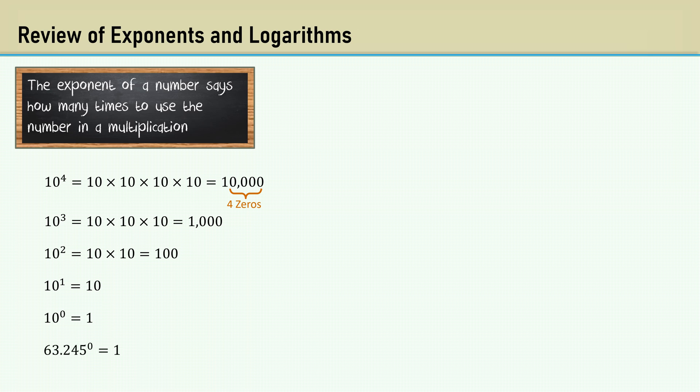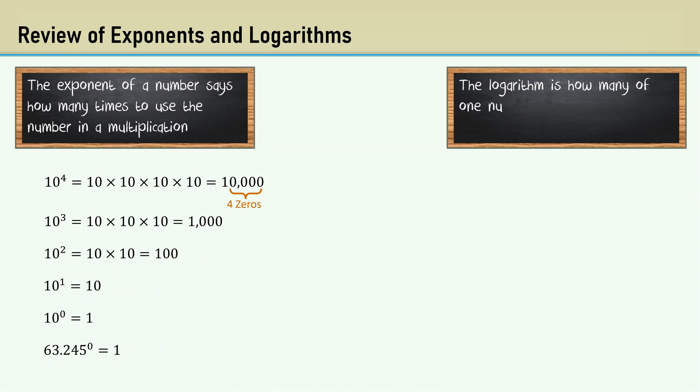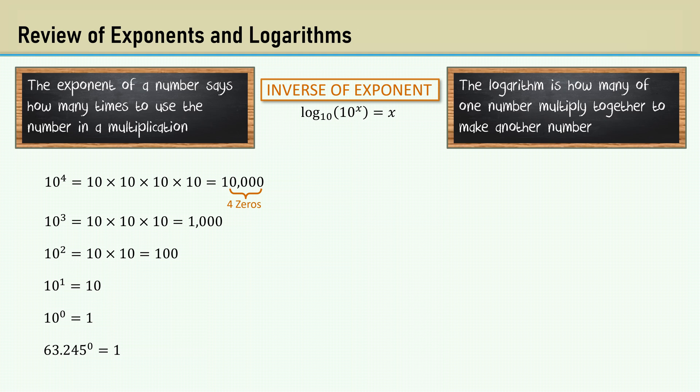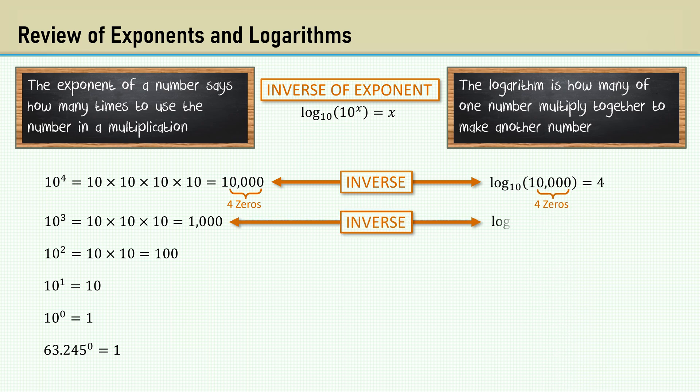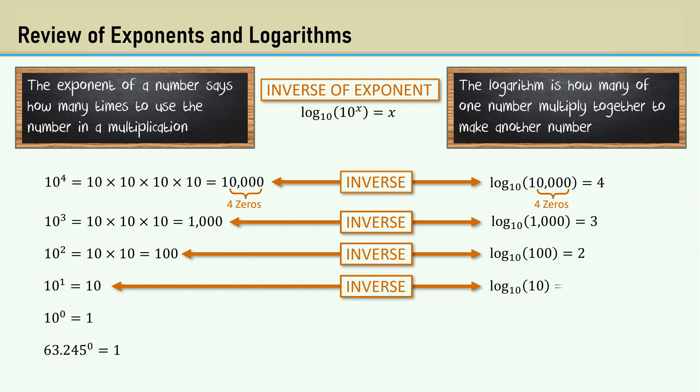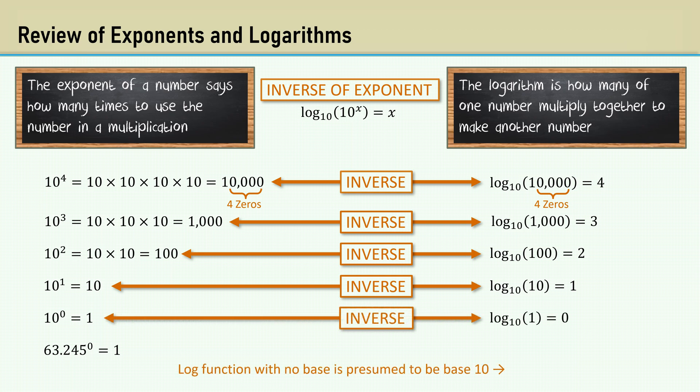The logarithm is how many of one number multiply together to make another number. The base 10 log function is the inverse of 10 to the x power. So, the log base 10 of 10,000 is 4. Note again the four zeros. The log base 10 of 1,000 is 3. The log base 10 of 100 is 2. The log base 10 of 10 is 1. And the log base 10 of 1 is 0. The log function with no base is presumed to be base 10.